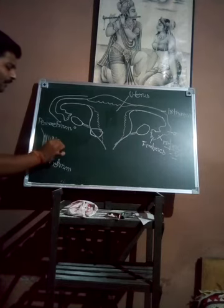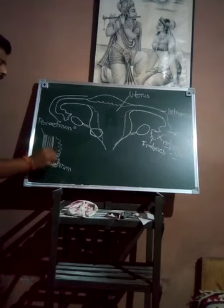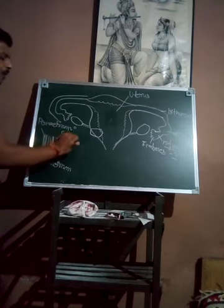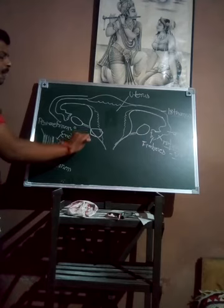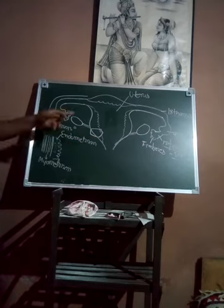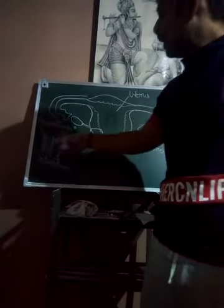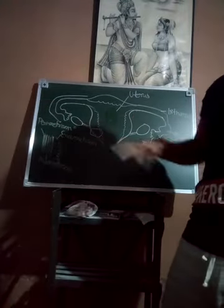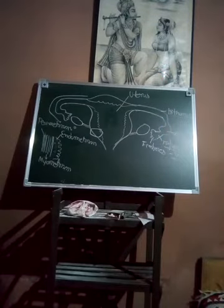The inner layer has glandular cells — uterine glands and a rich supply of blood vessels — and this layer is called the endometrium. So the wall of the uterus is made up of three different types of tissue: the outermost perimetrium, the middle myometrium made up of smooth muscle, and the innermost endometrium made up of uterine glands.